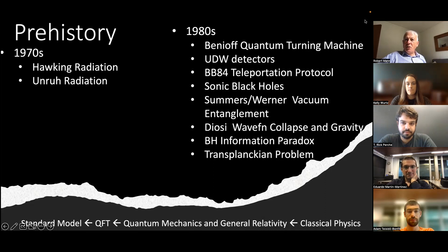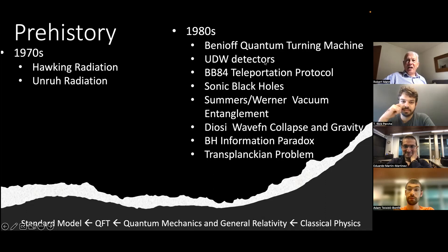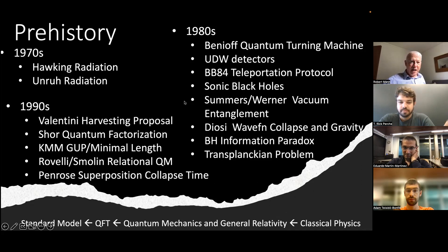In the 1980s, a few more precursor ideas came about: the notion of a quantum Turing machine, the Unruh-DeWitt detector which proved very important, the BB-84 teleportation protocol, sonic black holes proposed by Bill Unruh. Summers and Werner showed the quantum vacuum was an entangled structure. Diosi proposed gravity could collapse a wave function, and the black hole information paradox and trans-Planckian problem were formulated.